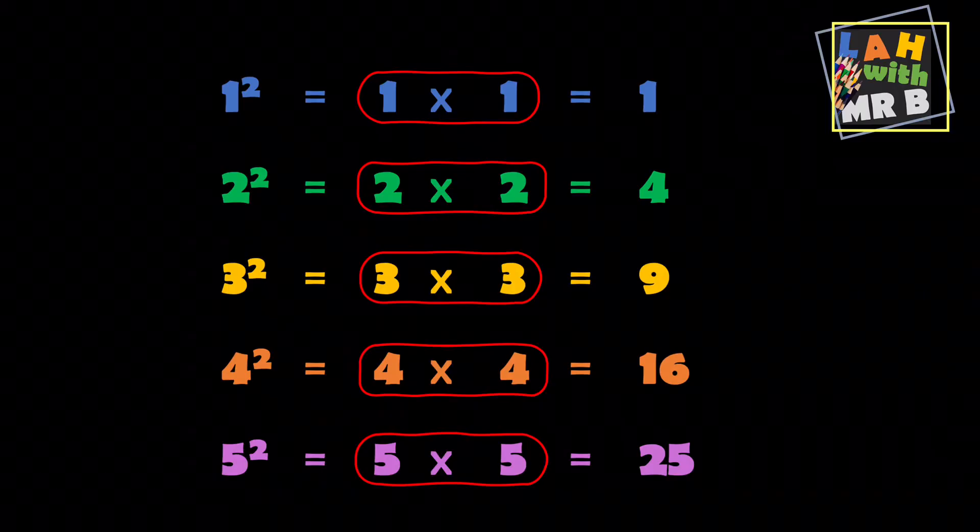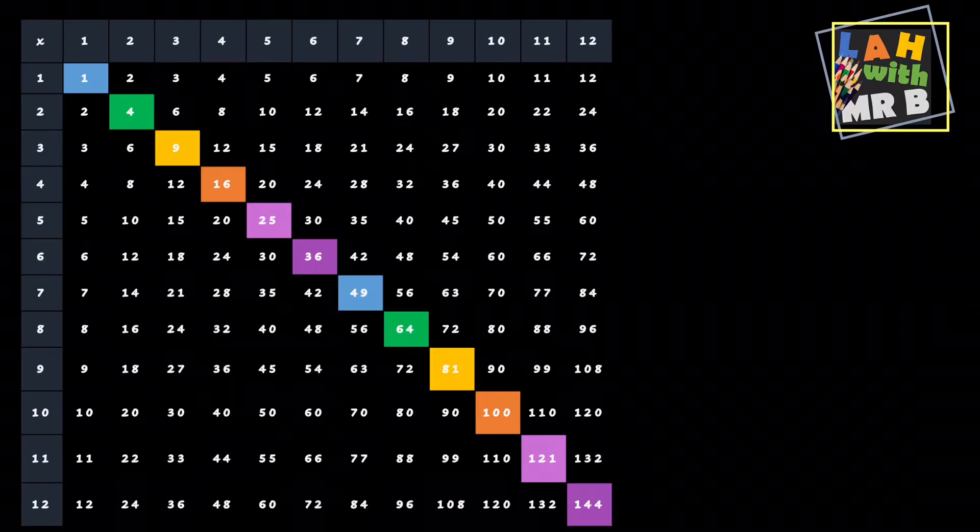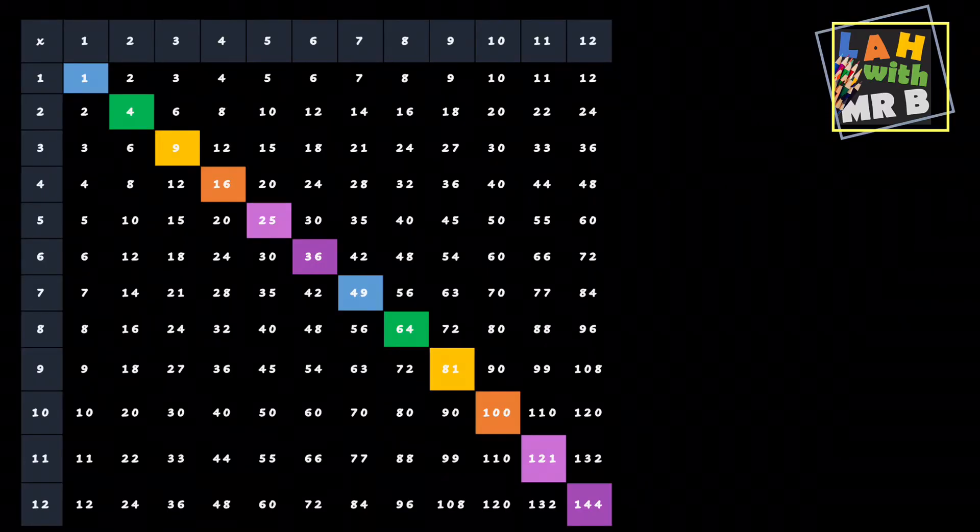You can do that with all of these numbers. You could do two squared, three squared, four squared and so on. You get the idea. The good news is that if you know your times tables you will already know most of the squared numbers below 200. That does sound pretty impressive so give yourself a pat on the back for that.